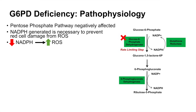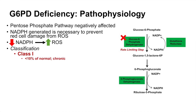Depending on the extent to which the glucose-6-phosphate dehydrogenase enzyme is affected, you can get even more reactive oxygen species and more damage to red blood cells. This leads to a classification of the condition based on severity. Class 1 glucose-6-phosphate dehydrogenase deficiency is the most severe, where individuals have less than 10% of the normal enzyme amount or activity.